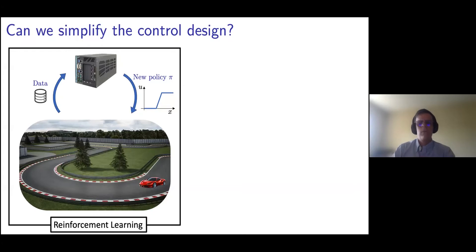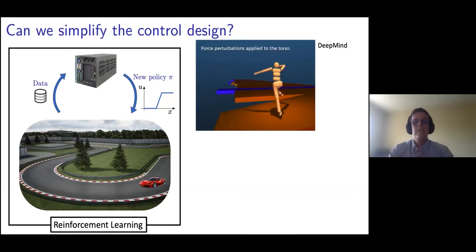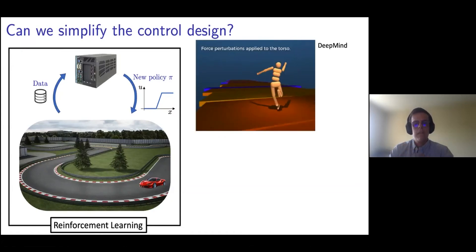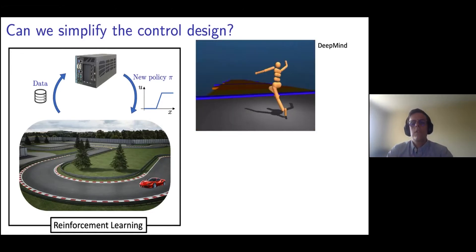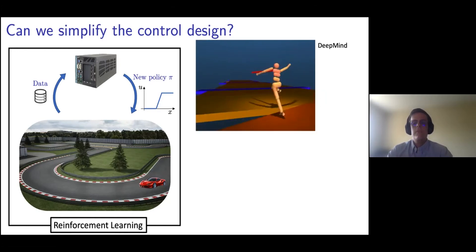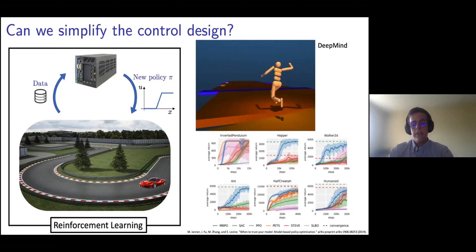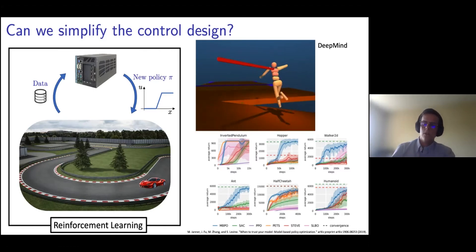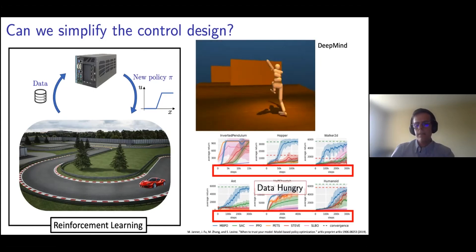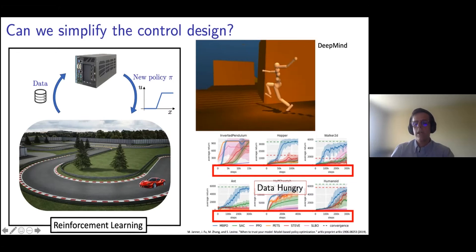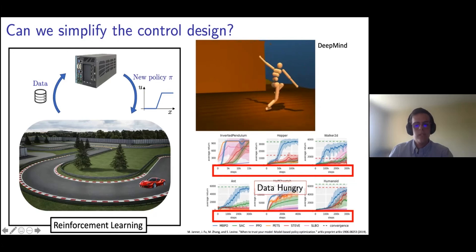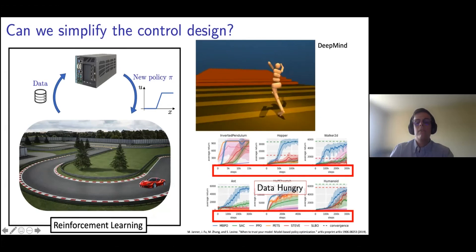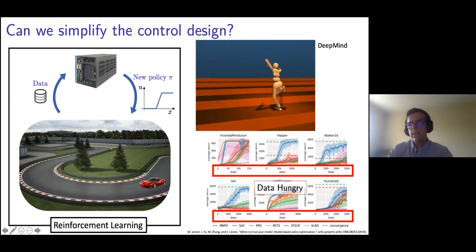There are several research labs and companies that have the mission of designing a learning-based controller that can be automatically deployed on very challenging tasks. For instance, in this video on the top right, we see an algorithm from DeepMind that is learning how to run in a simulated environment. We've seen tremendous success in recent years. However, there is a major drawback. In this figure on the bottom right, the author benchmarked six different model-based and model-free reinforcement learning strategies, and it took about 5,000 data points to simply learn how to balance an inverted pendulum.